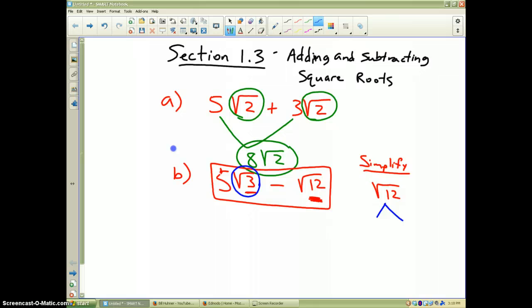Well we all know that 12 is the same as the square root of 4 times the square root of 3. 4 is the largest perfect square that goes into 12 and so this part becomes 2 square roots of 3.